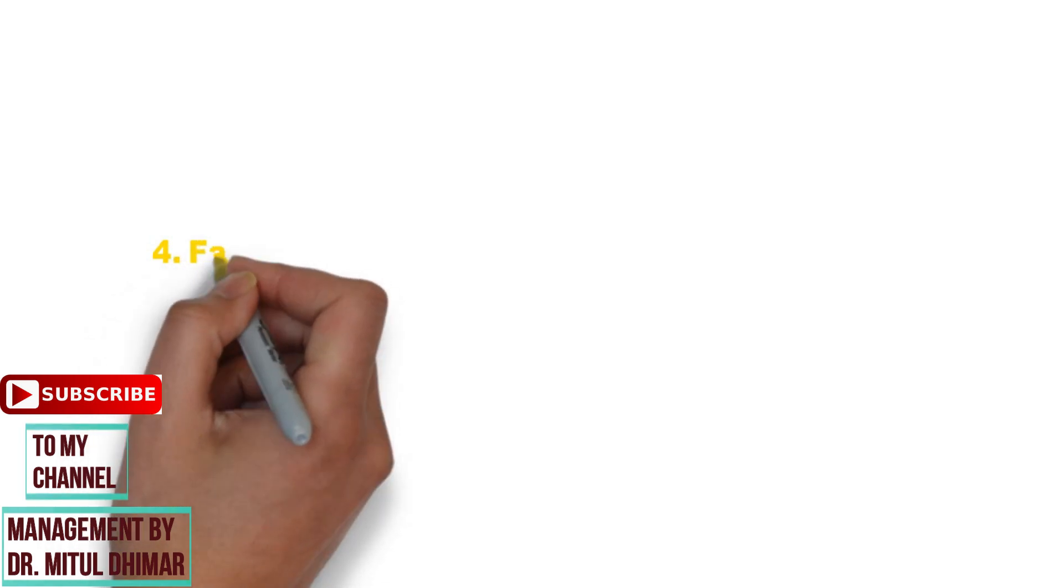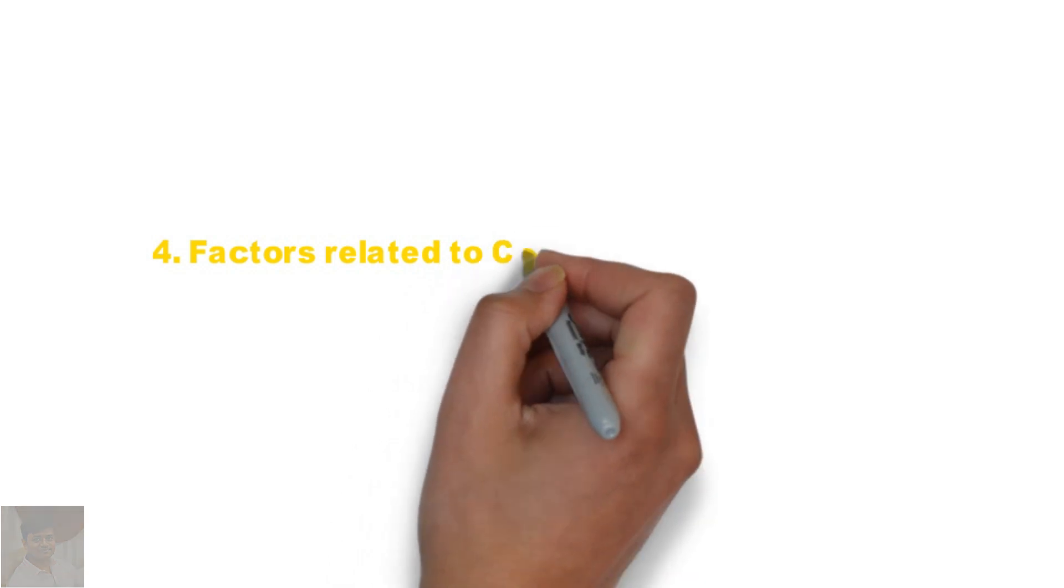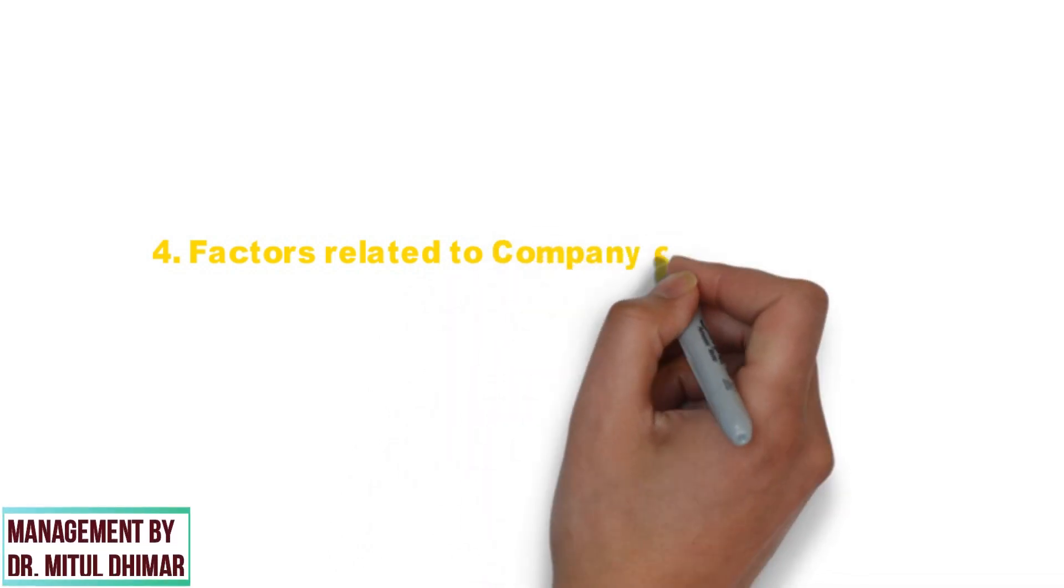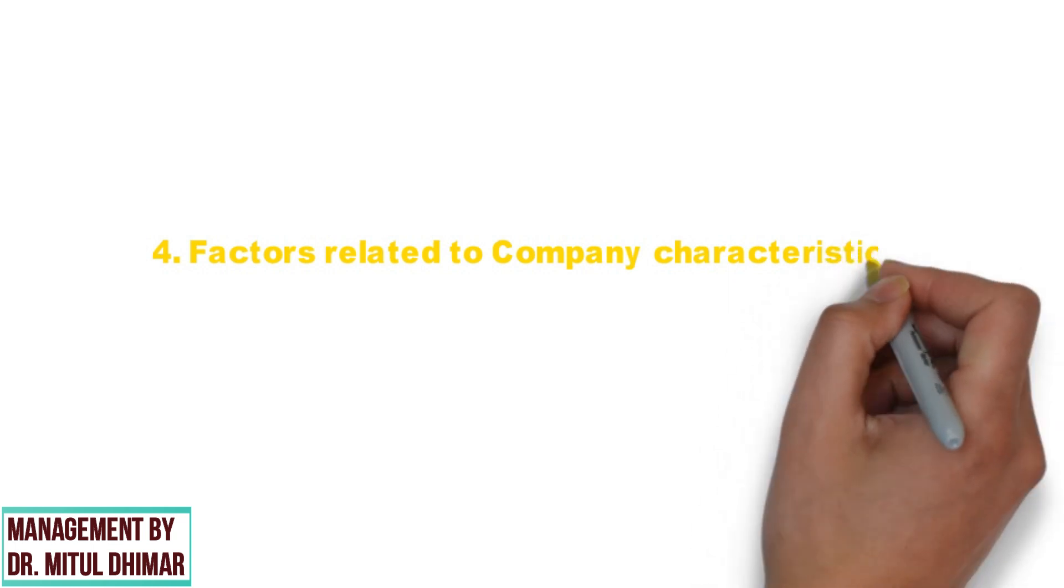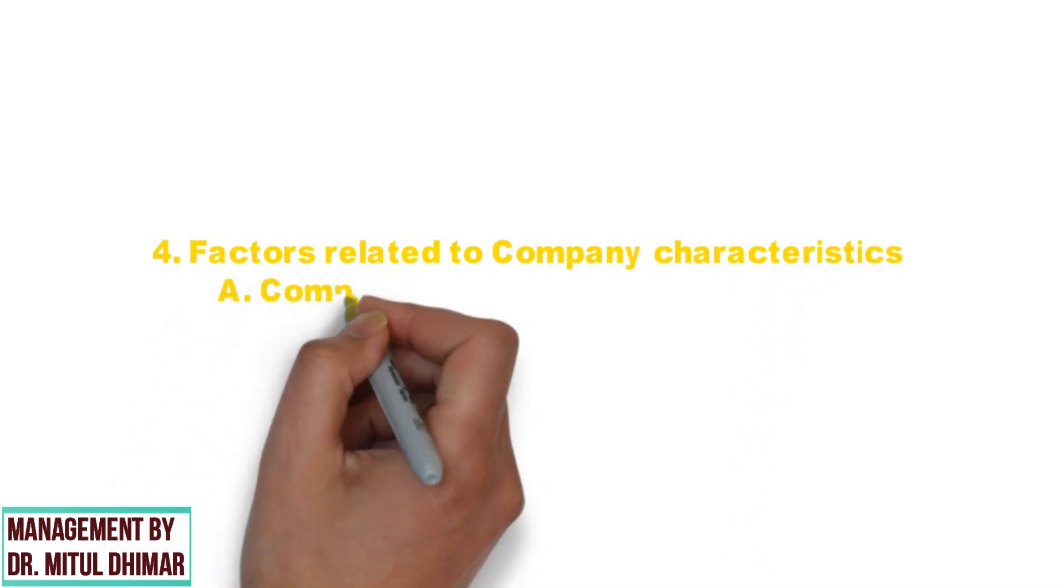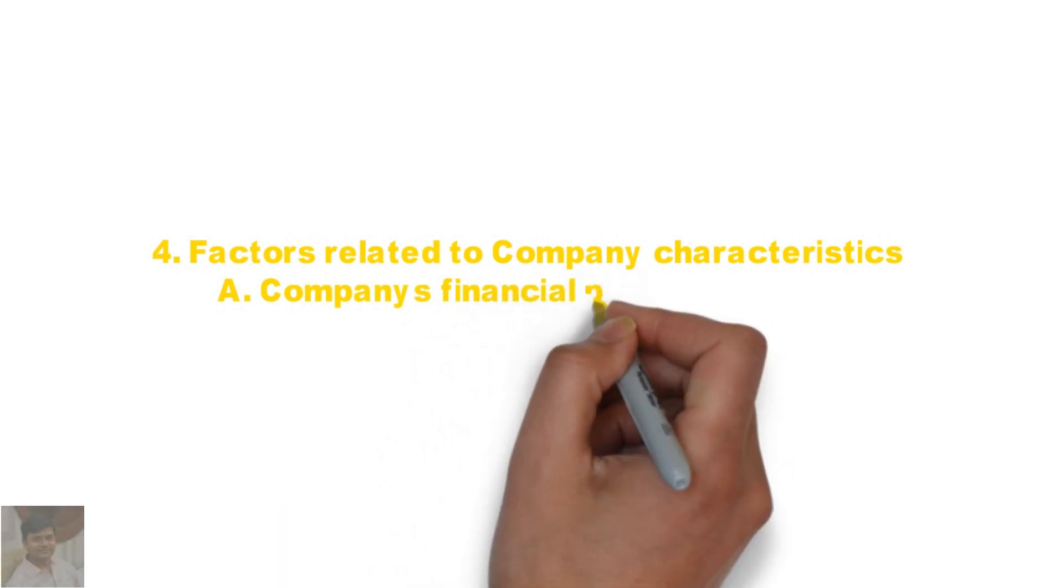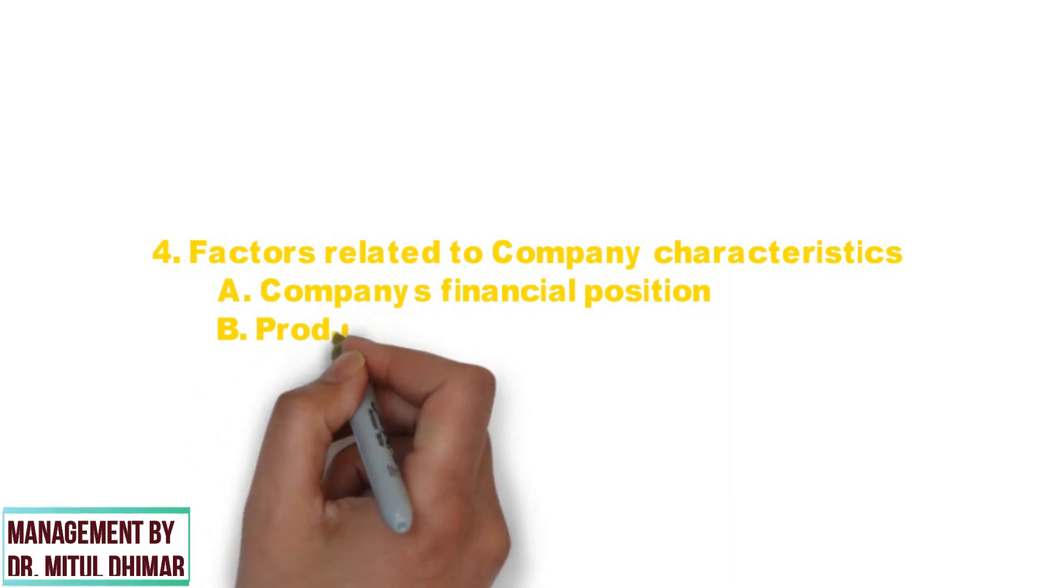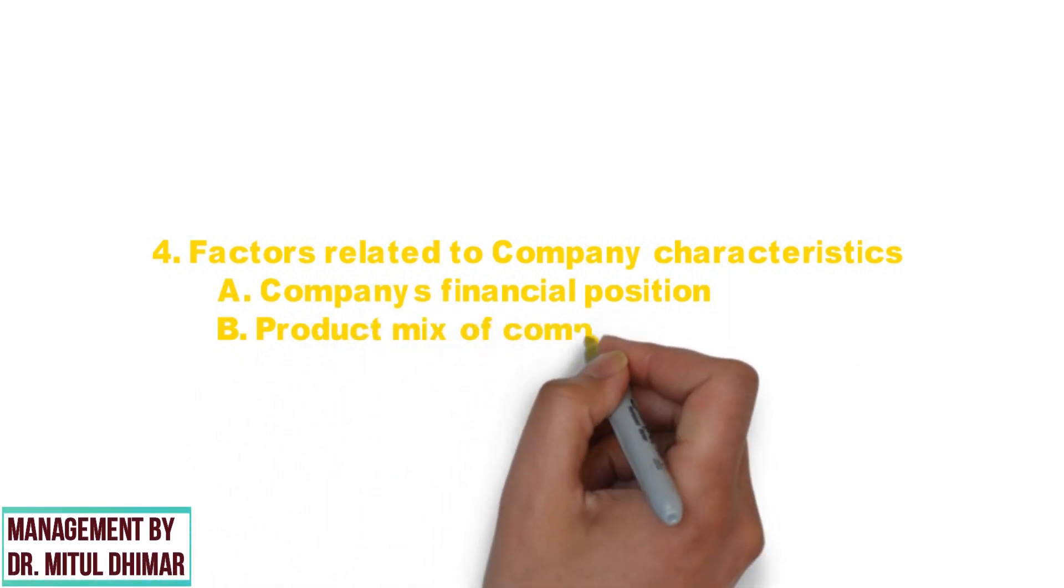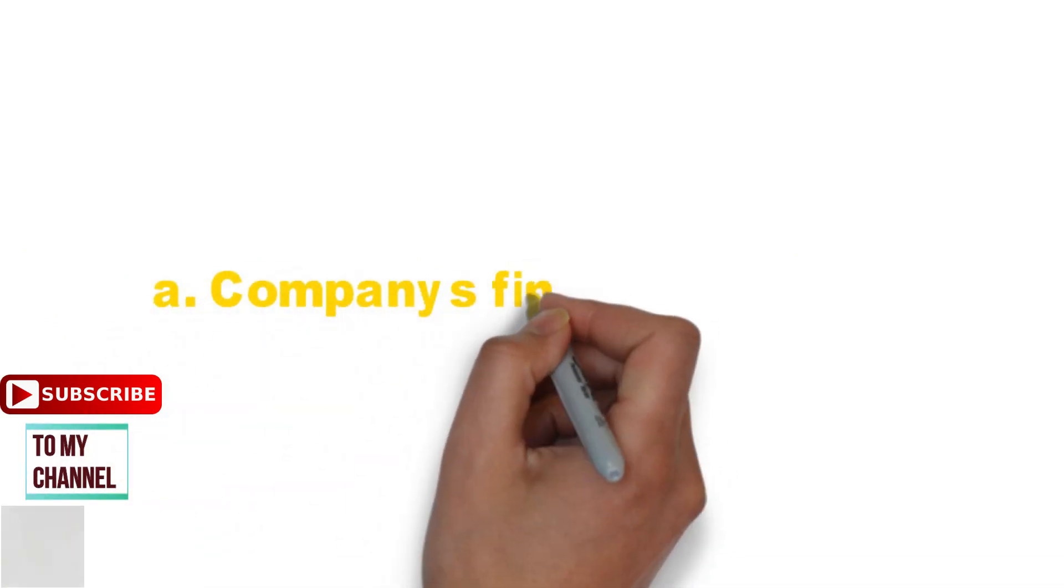Number four factor is company characteristics. The company's internal situation have a direct impact on the choice of the marketing channel. The manager needs to analyze the factors related to company to decide the best channel. Following two factors we are going to study in detail: company's financial position and product mix of company.